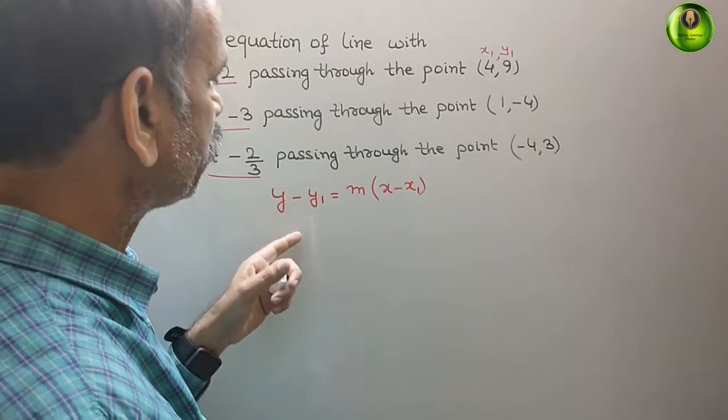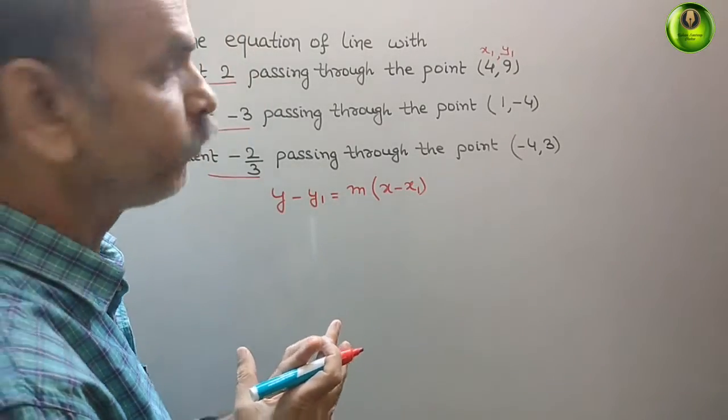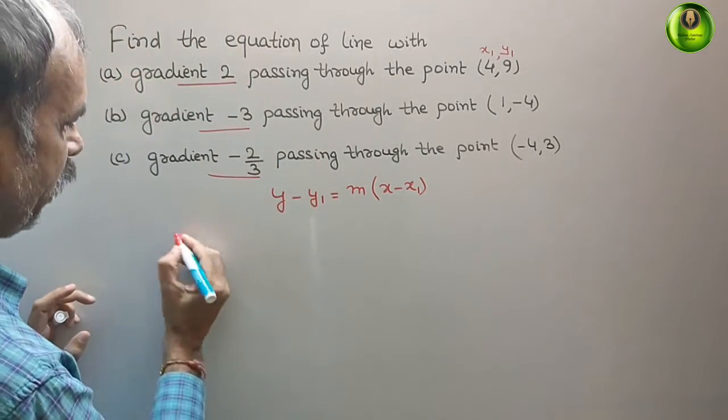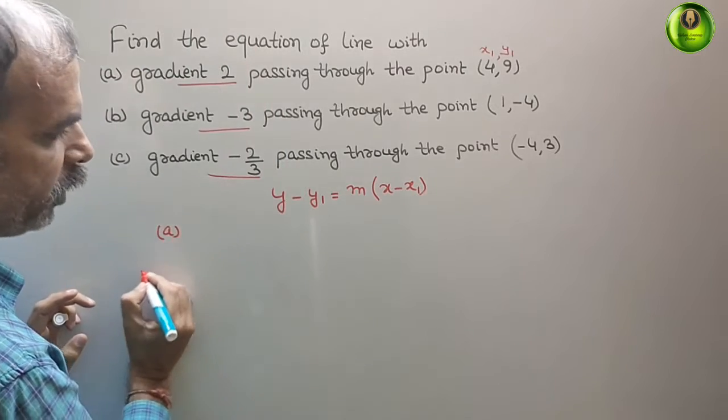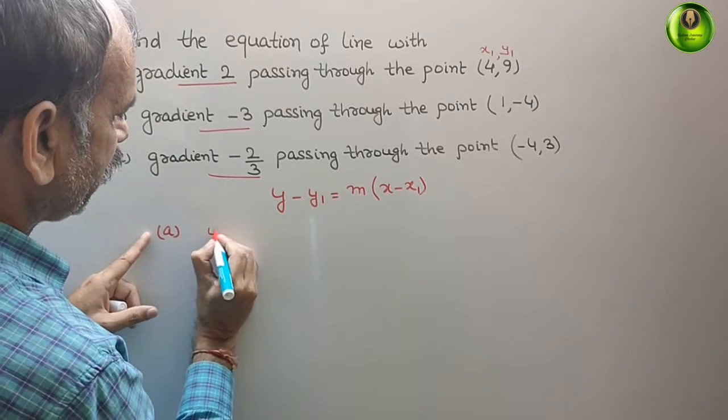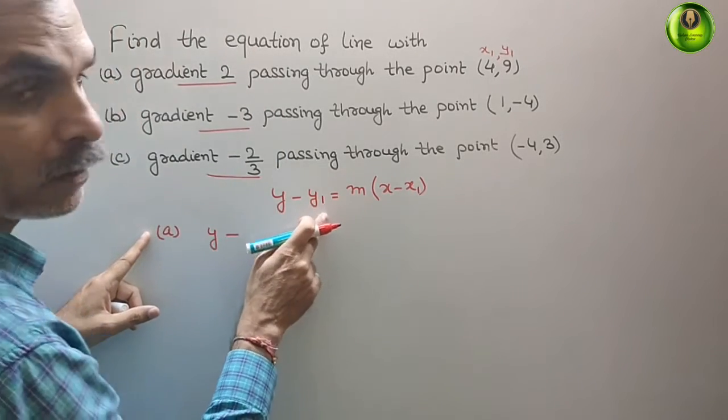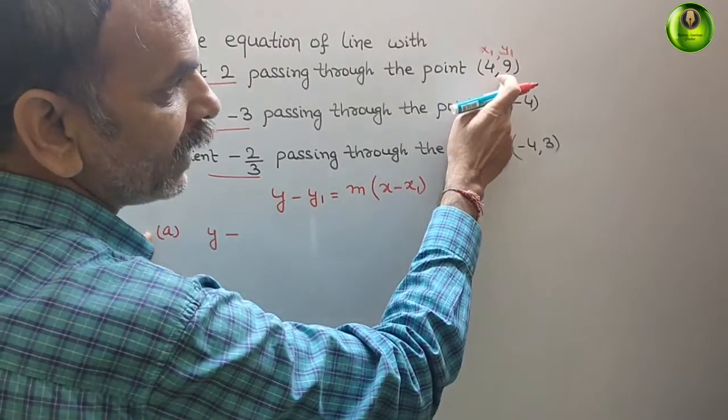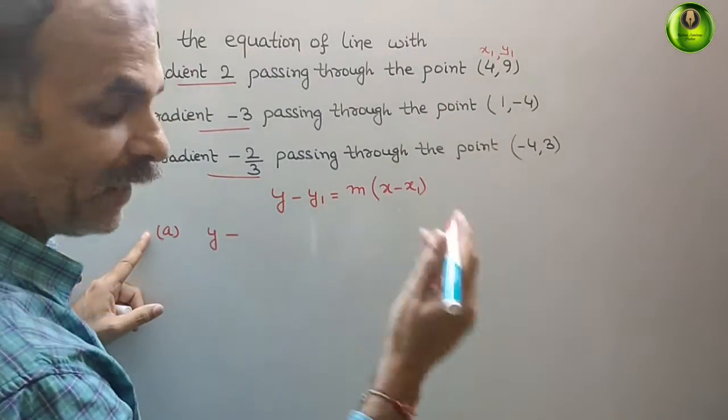So now we will substitute one by one. For the first one, see this, (a). How it will be? y minus y1. So here y1 is 9, that means minus 9.